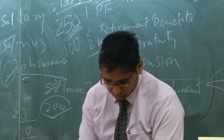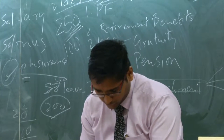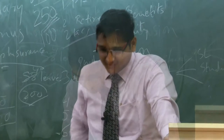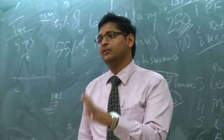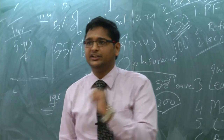Let us take up AS4 now - Accounting Standard 4, contingencies and events occurring after balance sheet date. When they issued Accounting Standard 29, they covered contingencies in that chapter and removed it from AS4. So tomorrow we will do AS29 and cover contingencies. Today we are only covering events occurring after the balance sheet date.